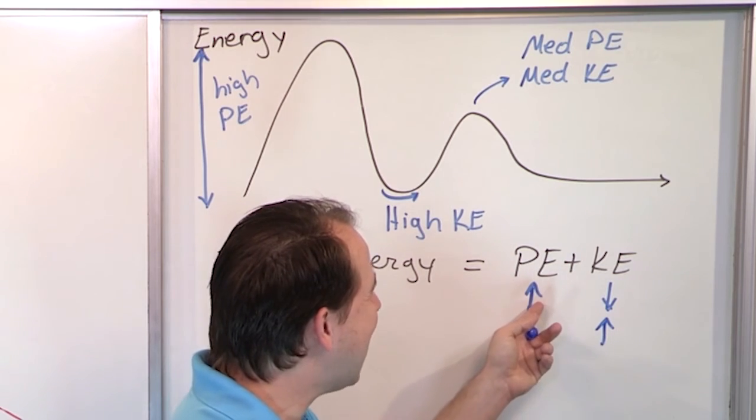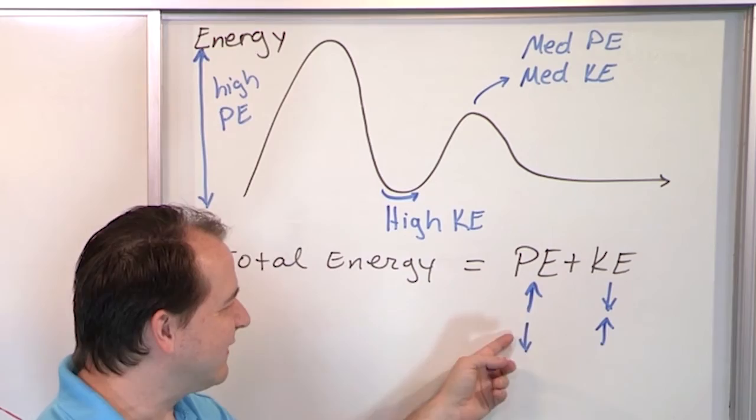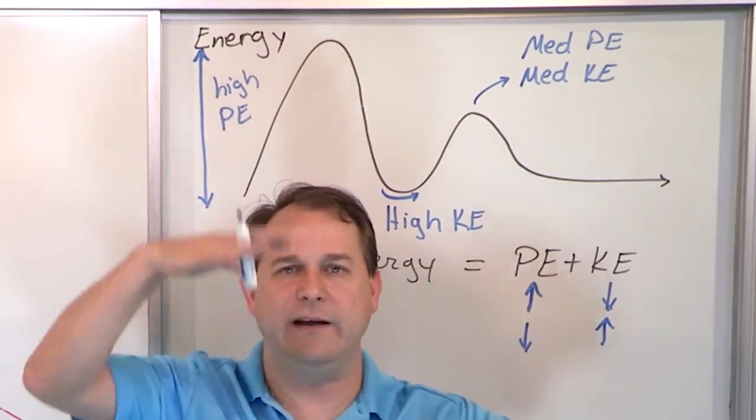Every time the potential energy gets high, my kinetic energy must get low. And every time the potential energy gets low, the kinetic energy must be high. So it's like a trade-off.